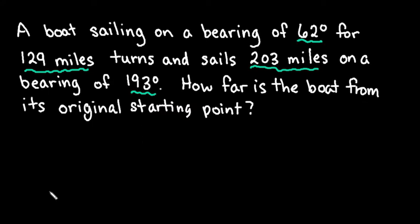When we're doing this, we want to draw a picture. We're going to start with a point as our starting point, and I'm going to draw a northward direction here. When we have a bearing of 62 degrees, we always start from the north and rotate 62 degrees clockwise. This gives me the direction the boat is sailing, and we're going a total of 129 miles in this direction.